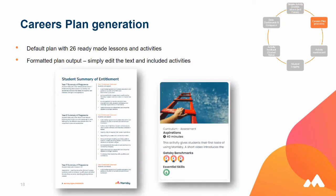By using everything we've covered, Morrisby generates your career plan, which can then be put onto your website. We give you a template of the things you should really be doing when it comes to statutory careers guidance in school, but you can amend these. You turn it into a PDF and put that onto your website. It includes all your core activities and a summary of what activities you're planning with which year group in which term. Once you've marked a core activity, it all gets updated automatically — saving the big spreadsheet on the wall that keeps getting updated.